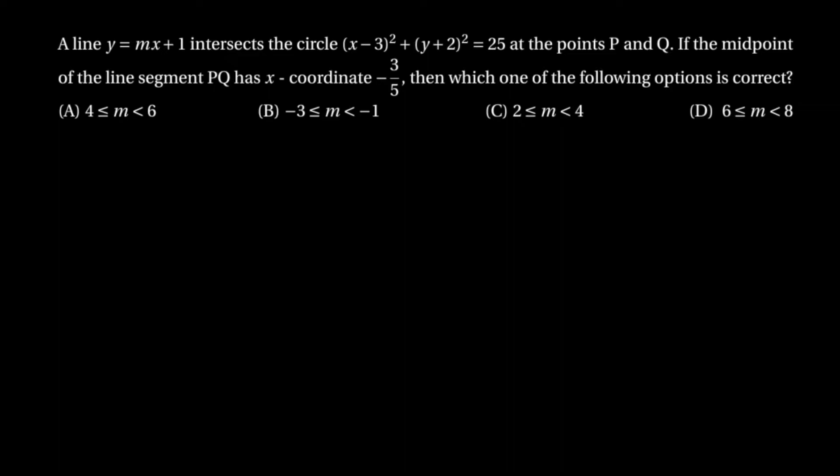When you look at the options, the options talk about a range of values of m. So either we have to get the value of m as an inequality, or if we can find the exact values of m, the options talk about the range of values in which the exact values of m lie.